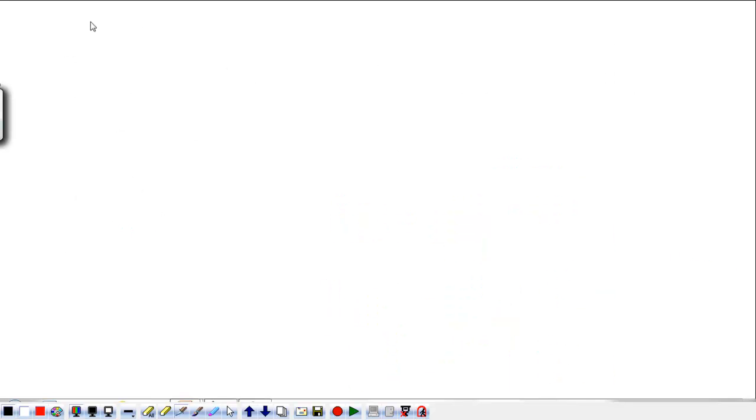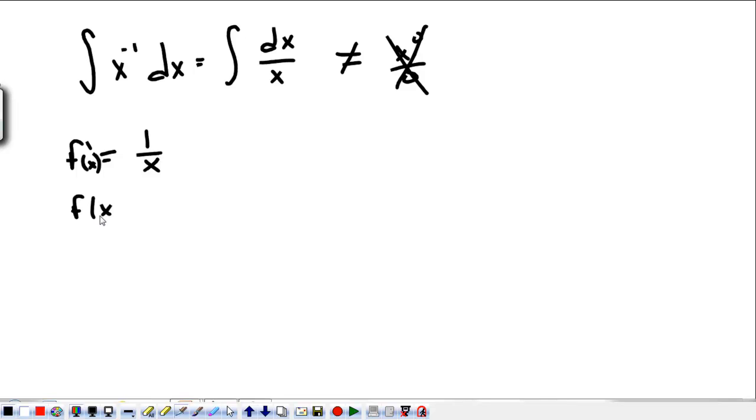Let's talk about our exception. The integral of x to the negative 1 dx. Another way that's written is the integral of dx over x. Now, we cannot use our power rule. This is bad because we cannot have x to the 0 over 0. That's no good. So, instead of thinking of it as, in terms of an integral, f prime of what function is equal to 1 over x? If f prime of x is 1 over x, we should know that f of x is equal to the natural log of x.